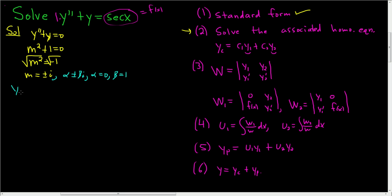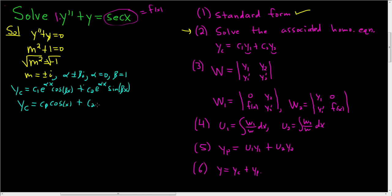The solution form is c1·e^(alpha·x)·cos(beta·x) plus c2·e^(alpha·x)·sin(beta·x). Since alpha is 0, e^(0·x) equals 1 and drops out. So we get yc equals c1·cos(x) plus c2·sin(x). I'll circle that — it's not the final answer but we don't want to lose track of it.